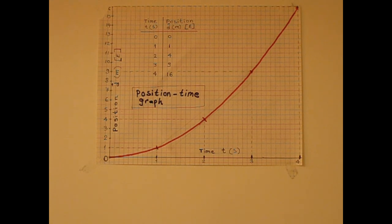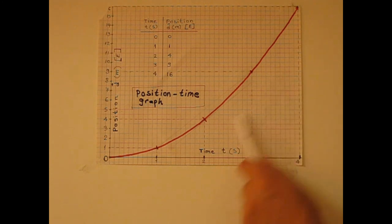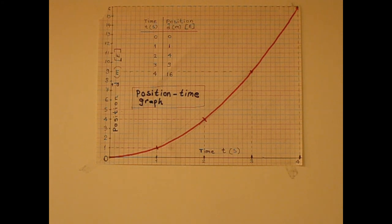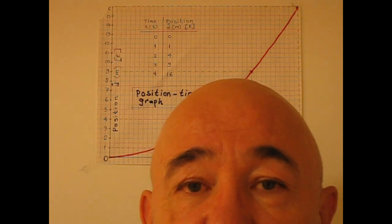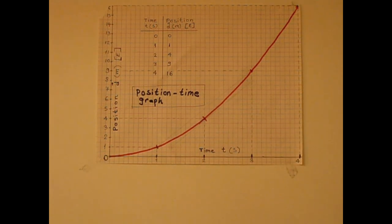In uniformly accelerated motion, acceleration is constant — meaning change in velocity is constant. The position-time graph is a parabolic curve, the velocity-time graph is a straight line with a slope, and the acceleration-time graph is a horizontal line. I hope that is clear. Thank you very much for watching.